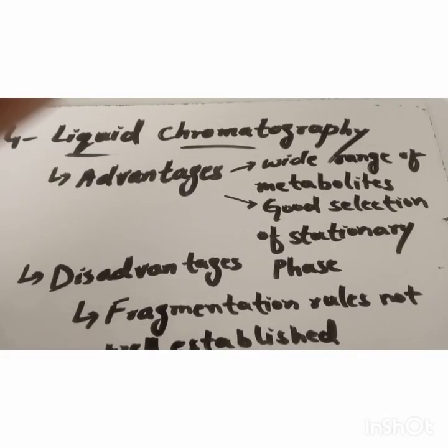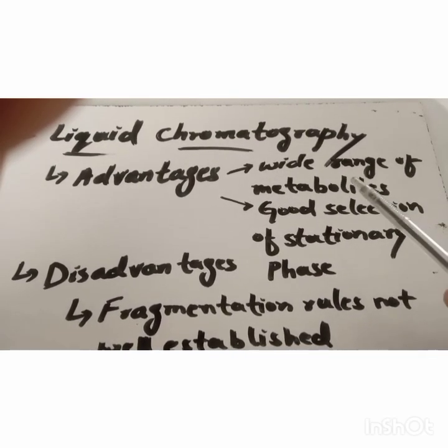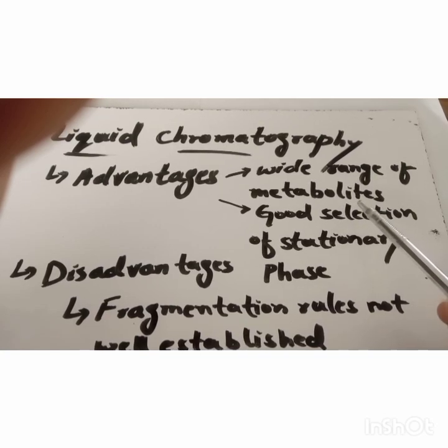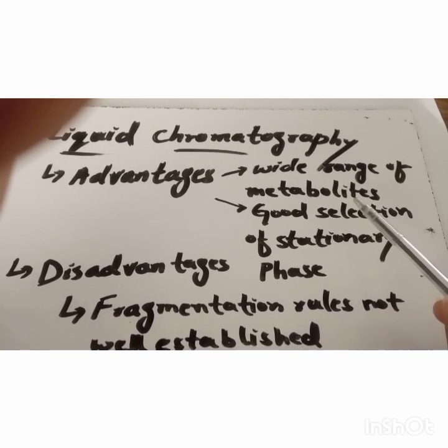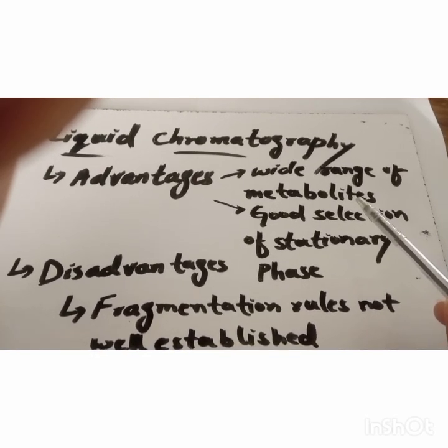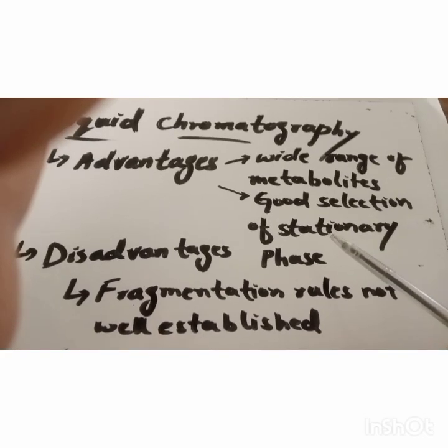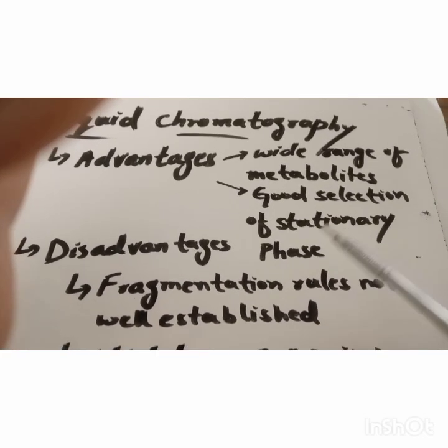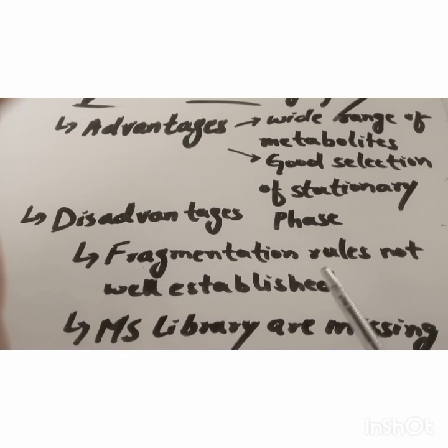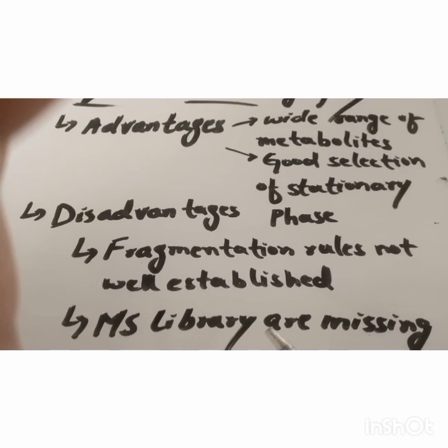Number four: liquid chromatography. Advantages: it is capable of analyzing a wide range of metabolites that are thermally labile, having high polarity and high molecular mass. Second advantage is good selection of stationary phase. Disadvantages are that the fragmentation rules are not well established and MS libraries are missing.